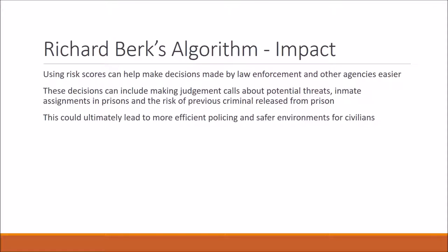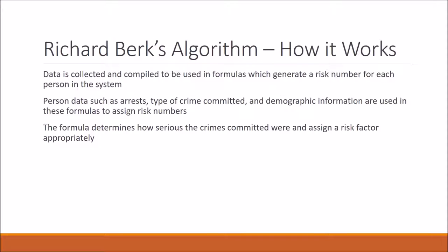The impact of the algorithm is that using these risk scores, law enforcement can make easier decisions about crime. Data is collected and compiled to be used in formulas which generate the risk for each person in the system. Person data that's collected — such as arrest type, crime committed, and demographic information — are used to generate these risk scores. This formula determines how serious the crimes committed were and assigns a risk factor appropriately.